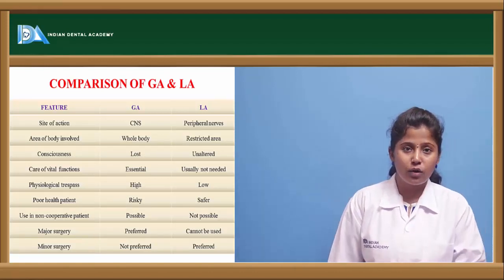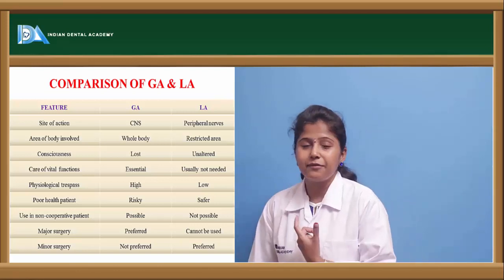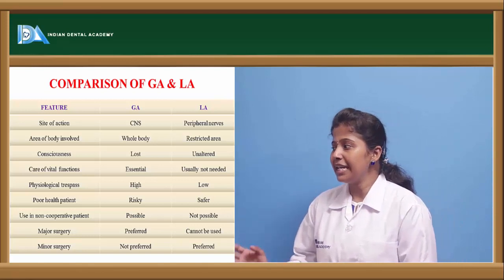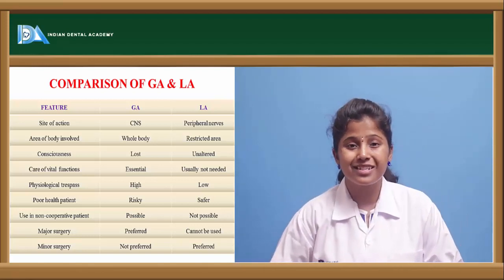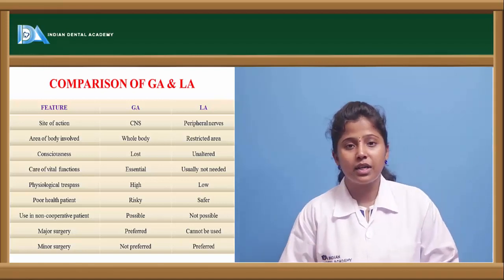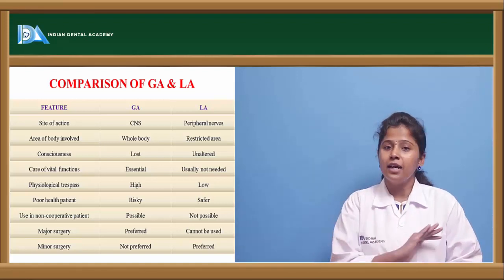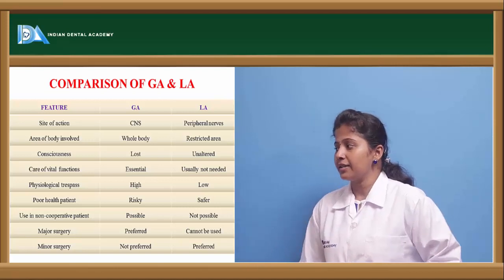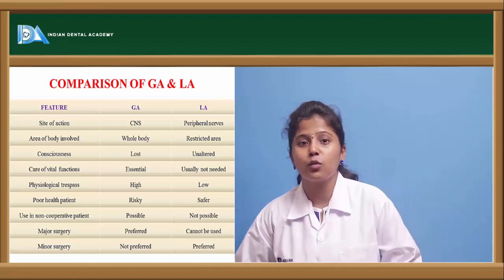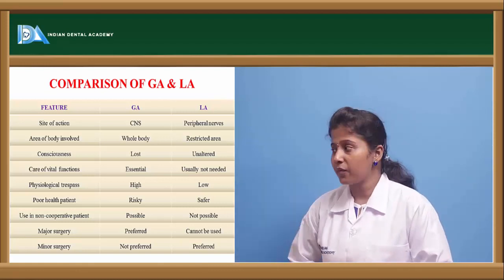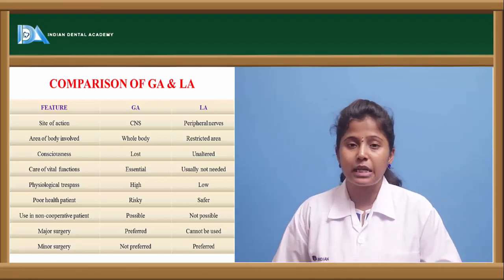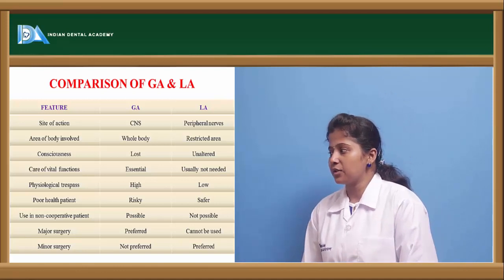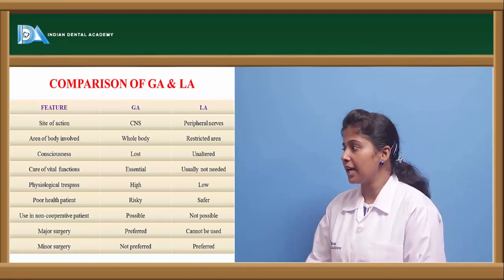Comparing general anesthesia with local anesthesia: the site of action of general anesthesia is the CNS, while local anesthesia affects peripheral nerves and a localized area of the body. General anesthesia causes the whole body to lose consciousness, while local anesthesia is restricted to a particular area without affecting consciousness. Consciousness is lost in general anesthesia but unaltered in local anesthesia. Vital functions require essential care under general anesthesia but not under local anesthesia. Physiological trespass is high for general anesthesia and low for local anesthesia.